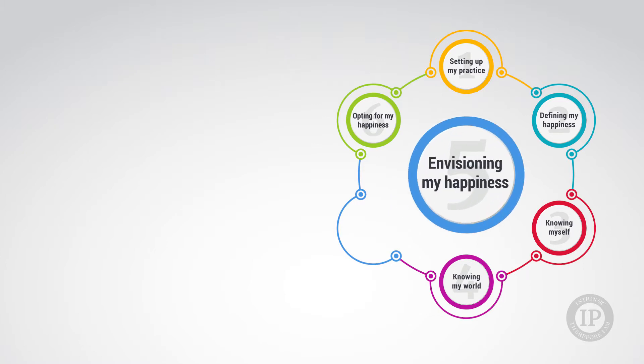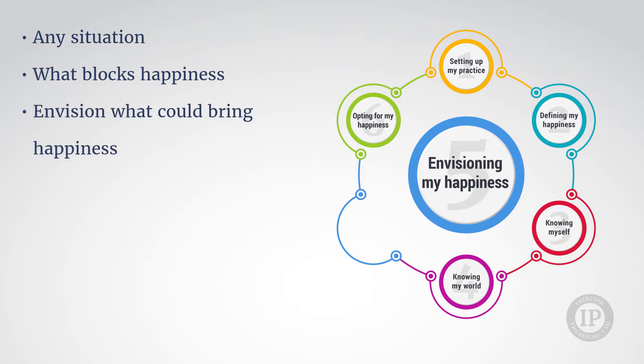The fifth step, entitled Envisioning my happiness, is where you can learn in any situation to evidence what blocks happiness in your experience of the situation and envision what could bring happiness in the experience of the same situation.